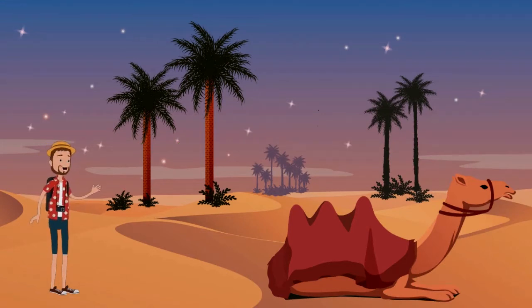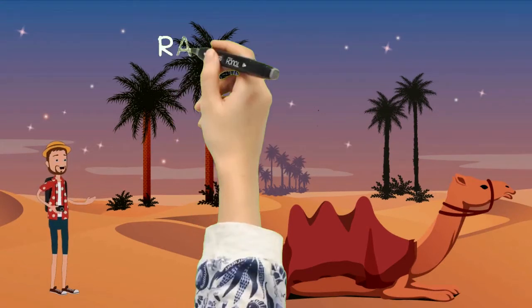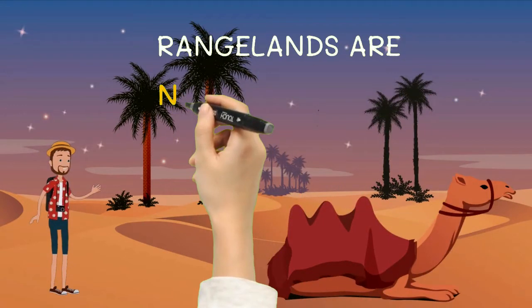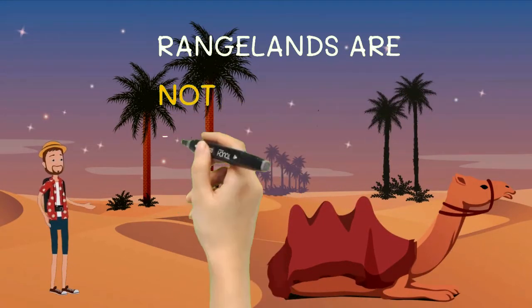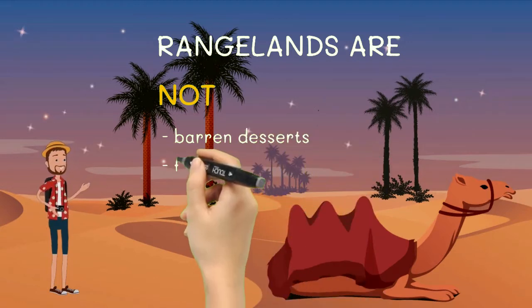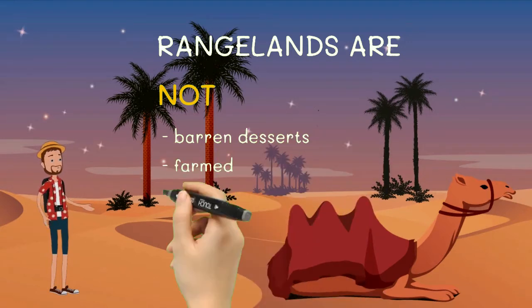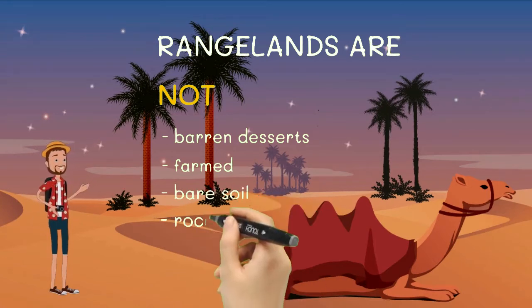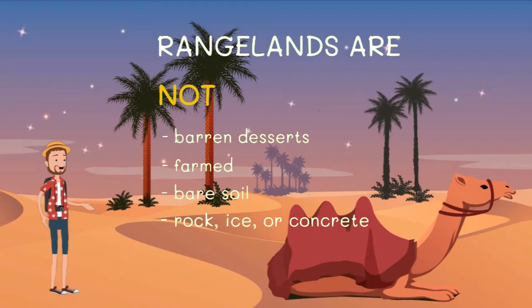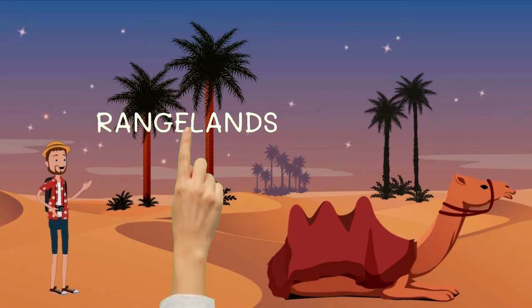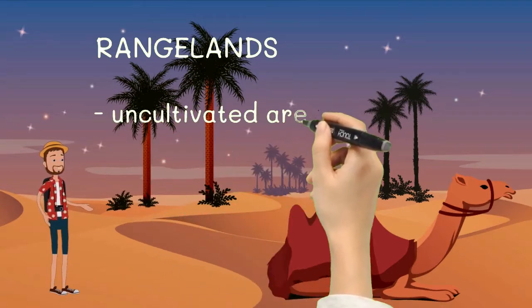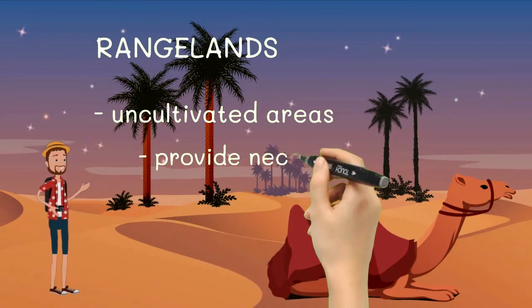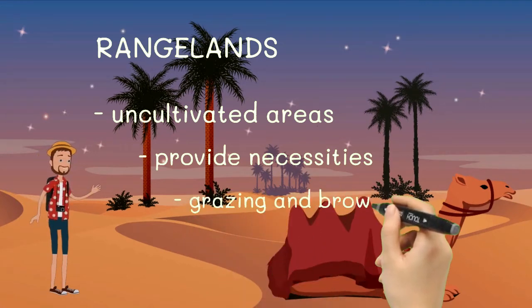Now, let us learn what is rangeland. Rangeland comprises all areas of the world that are not barren deserts, farmed, or covered by bare soil, rock, ice, or concrete can be classified as such. So basically, all areas can be classified as rangeland, except those we have mentioned above.